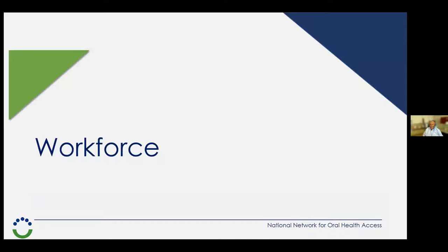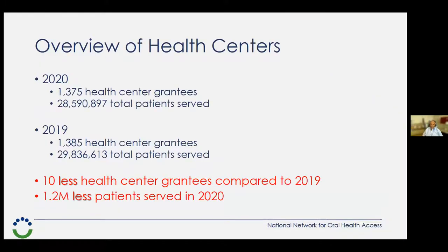Let's start with workforce. In 2019, we had a little over 1,300 health center grantees and nearly 30,000 total patients served. Compare that to 2020: we have 1,375 health centers but a total patient service of 28,591 plus. So we're looking at 10 fewer health centers compared to 2019, and 1.2 million fewer patients served in 2020. Overall, the big picture is that health centers suffered a setback during this period.